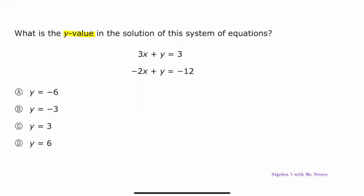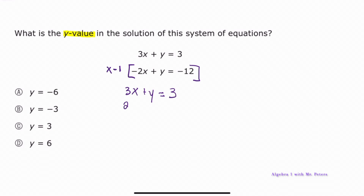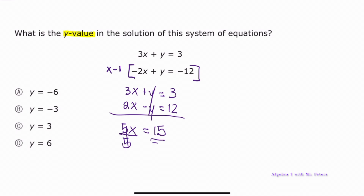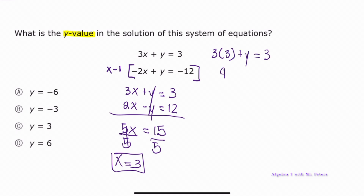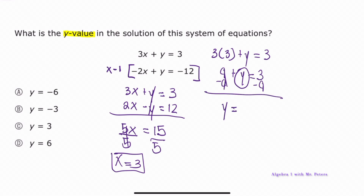They ask for the y-value in the solution of a system of equations. The quickest approach is elimination — multiply the second equation by −1 so that when added to the first, the y terms cancel. We're left with 5x = 15, so x = 3. Plugging back into equation 1: 3(3) + y = 3, giving 9 + y = 3, so y = −6. The correct answer is A.